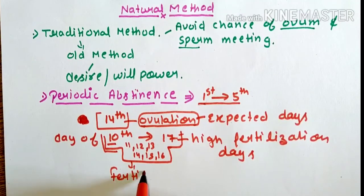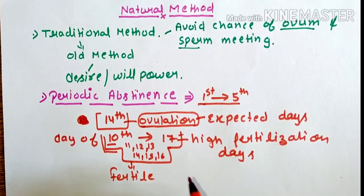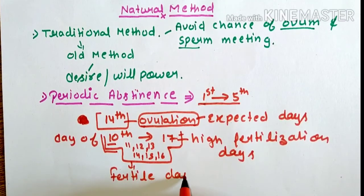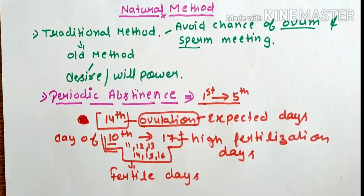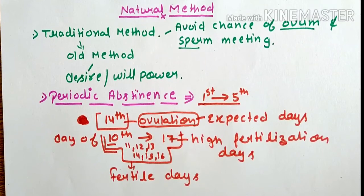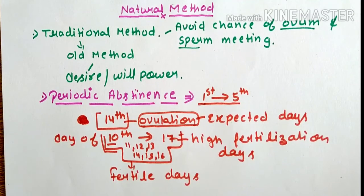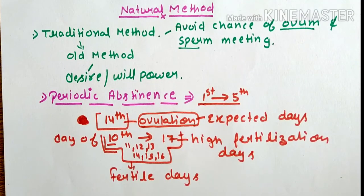Day 10 to 17 is a very fertile period because during these days there is a high chance of getting pregnant. So if you don't want a baby, you have to practice periodic abstinence during these days.